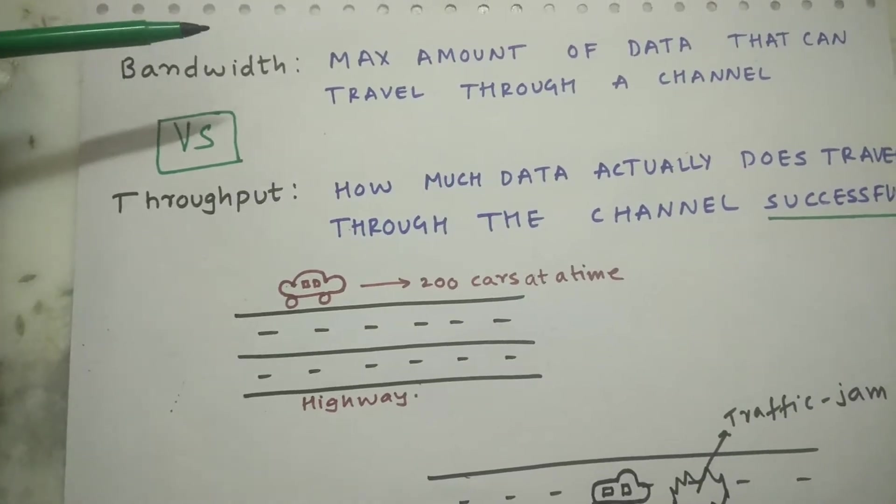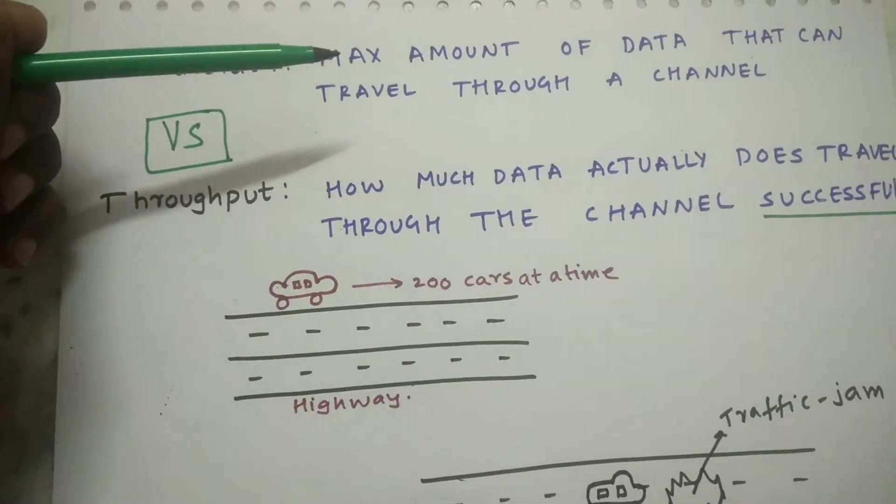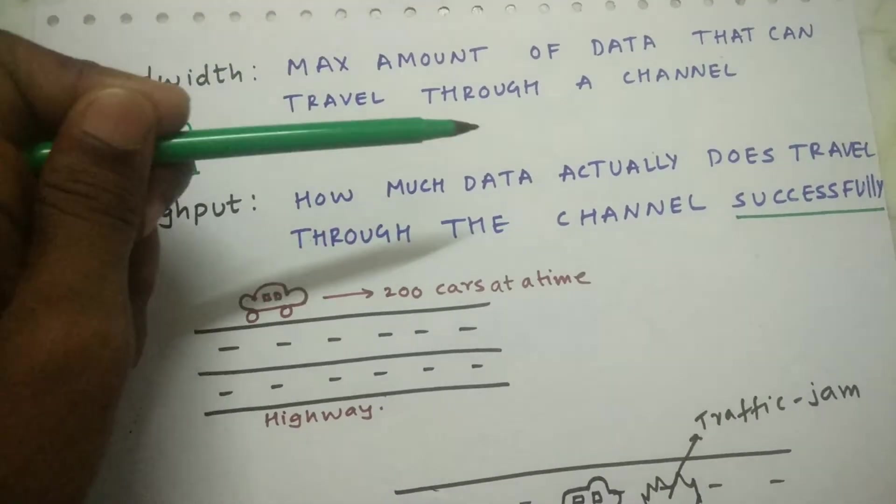So what's bandwidth? Bandwidth is the maximum amount of data that can travel through a channel over a period of time.